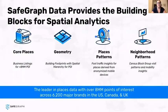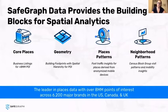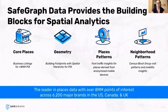At SafeGraph, we focus on being really, really good at one thing, and that's places data. We currently offer over 8 million POIs across over 6,000 brands in the US and Canada, and we also recently launched into the UK. We offer four main products. We offer traditional POI data called core places, which has brand attribution, NAICS codes, contact information, open/close information, lat/long coordinates, and the address.